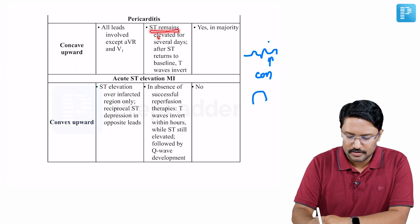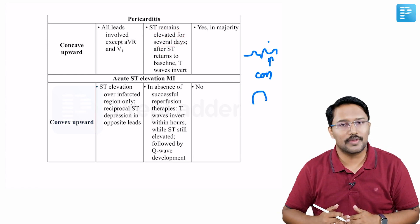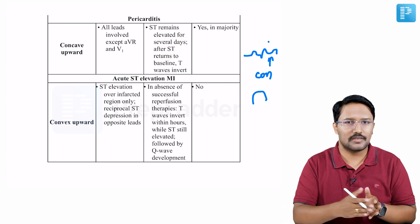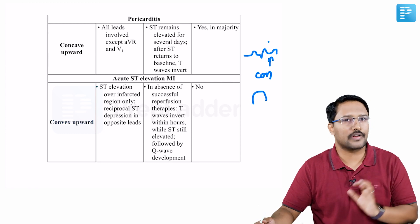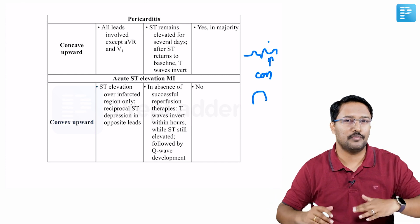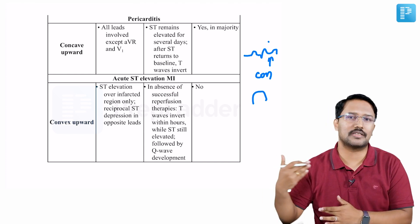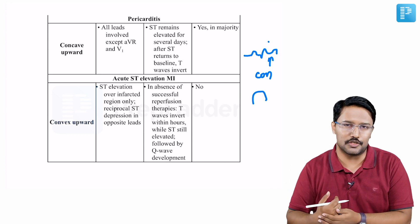The ST elevation in pericarditis will remain elevated for several days and then reverse to baseline, because acute pericarditis runs over days, not hours. But in acute MI, the ST elevation might return back to baseline post-intervention or within one or two days, and other changes of myocardial injury will start appearing.